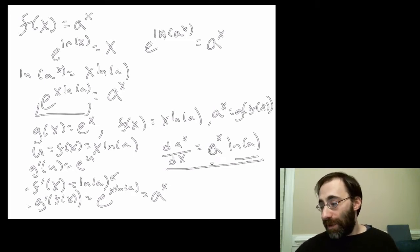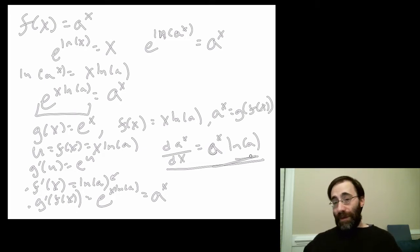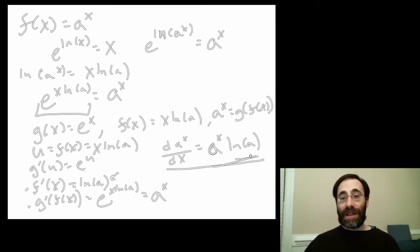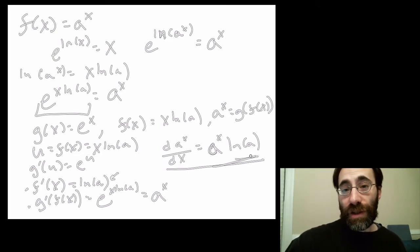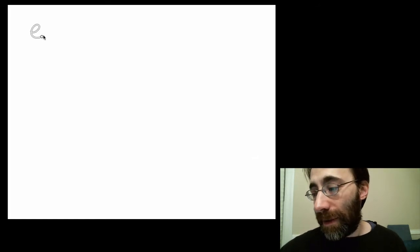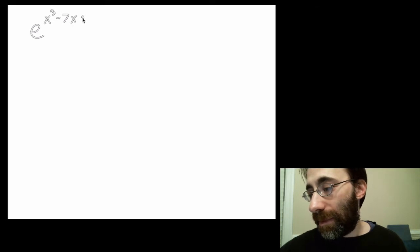You can just remember this one general rule, although frankly e to the x comes up a lot more often than a to the x does, for reasons we'll get into. To get used to this a little more, let's do a couple of examples that'll also help us use the chain rule better. We did e to the x squared in the last module; now try e to the x cubed minus 7x plus 1.